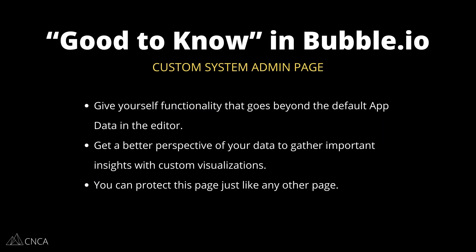Creating an admin page in your Bubble application is not usually something you first think about when putting together your core functionality, but it's something we encourage all of our clients to consider at the start of development because it's usually something they'll need long term. An admin page is a page you create for yourself as the app owner to have a system-wide view of everything going on in your app and to have a customized set of functionality that makes it easy to manage data.